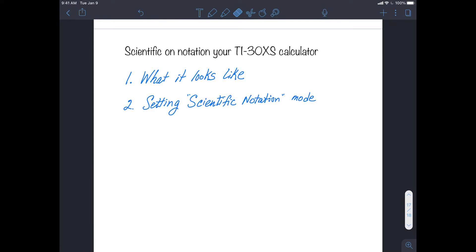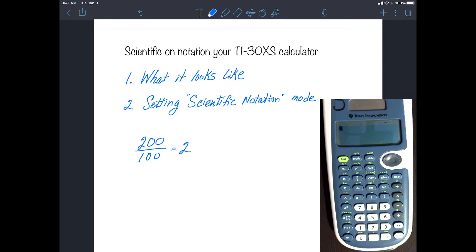Now when you're using the calculator to work with scientific notation numbers, you have to be a little bit careful, and here's why. We're going to do a simple problem that has a simple answer, but we're going to use scientific notation. The problem is 200 divided by 100, and I think it's pretty easy to see that the answer should be 2. So let's see what happens when we do this on the calculator using scientific notation.